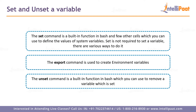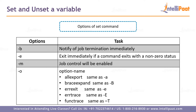The unset command is a built-in function in bash which you can use to remove a variable that was set. If you have already set a variable using export, you can use the unset command to remove it. Some options of set: -b notifies of job termination immediately, -e exits immediately if a command exits with a non-zero status, -m enables job control, and the allexport option — if you have not enabled it, you cannot use the export command.